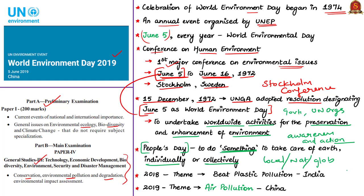Every year this day is organized around a particular theme, which gives importance to a particularly pressing environmental concern at that time. Last year's theme was to beat plastic pollution. This year's theme is air pollution. Every World Environment Day also has a different host country for the official celebrations, providing an opportunity for the host country to highlight the environmental challenges it faces and the worldwide supports and efforts it receives to address those challenges. The host of this year's World Environment Day event is China.